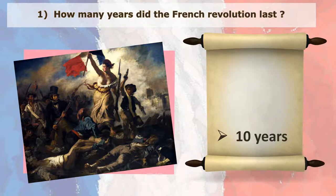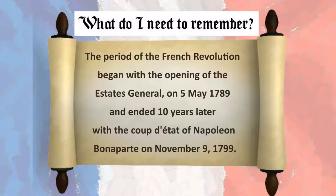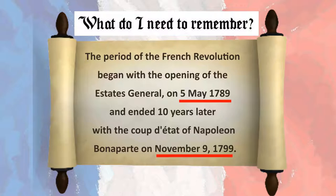10 years. The period of the French Revolution began with the opening of the Estates General on 5 May 1789, and ended 10 years later with the coup d'état of Napoleon Bonaparte on November 9, 1799.